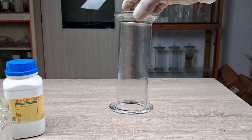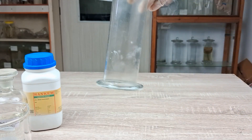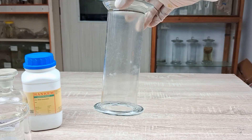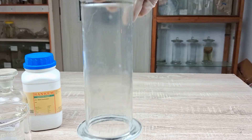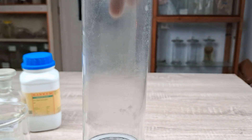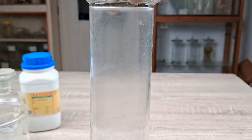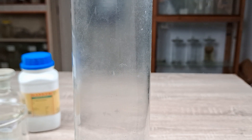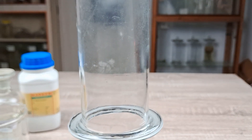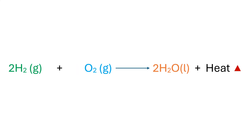When a burning splinter is introduced near the mouth of the gas jar filled with hydrogen gas, the gas immediately ignites explosively with a characteristic pop sound. Once the gas inside the jar had completely burned, you can see a hazy layer of condensation forming on the inner walls of the jar. Hydrogen gas reacts with oxygen present in atmospheric air to produce water. Just as in the burning of magnesium ribbon, this reaction also requires an external energy input in the form of heat — in this case the burning splinter — for the reaction to commence. The condensate on the inner walls is tiny droplets of water formed as a result of the combination reaction between the two gases, making this another example of a combination reaction because a single product, water, is formed.